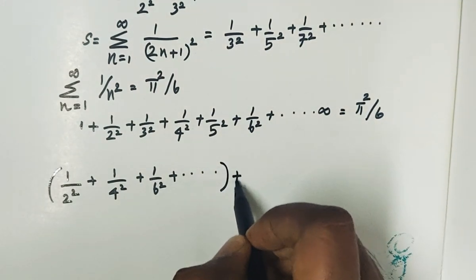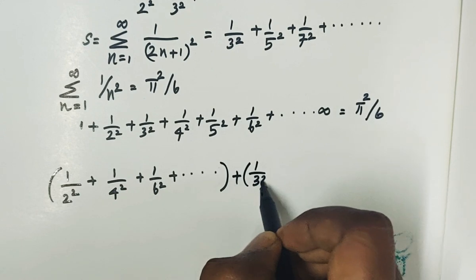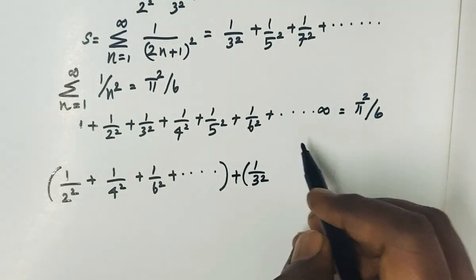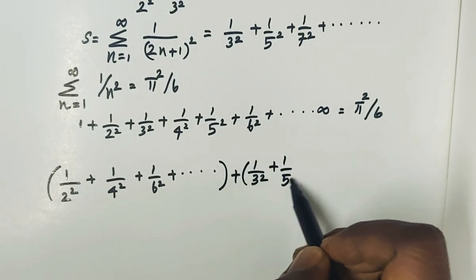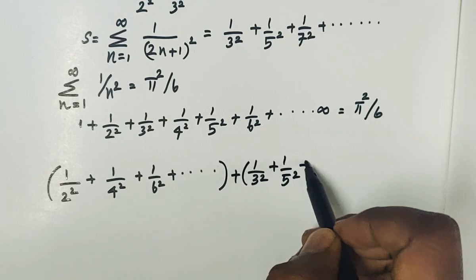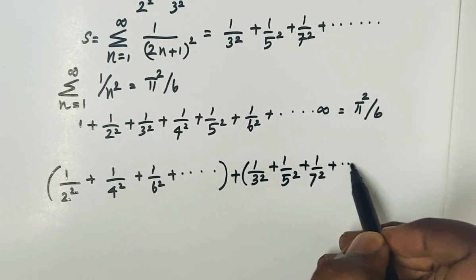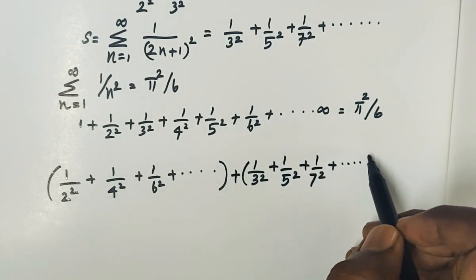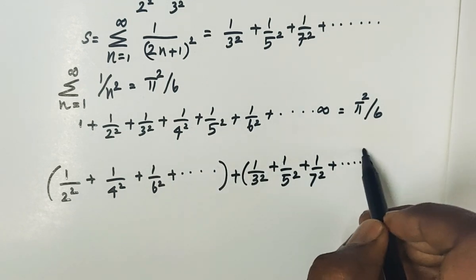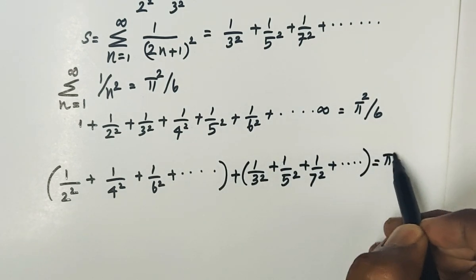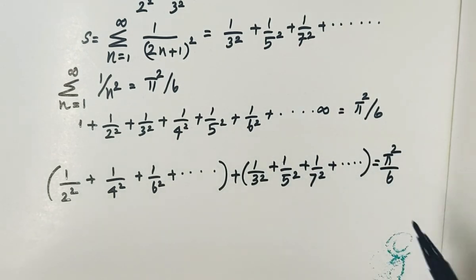We separate and add the odd terms: 1 by 3 square, 1 by 5 square, 1 by 7 square, and so on up to infinity. Together with the even terms, the total equals pi square by 6.